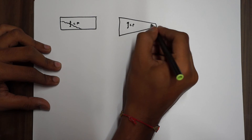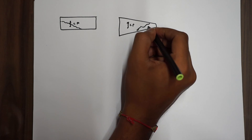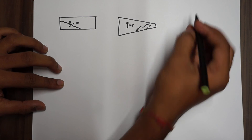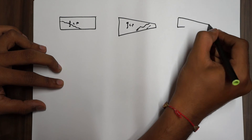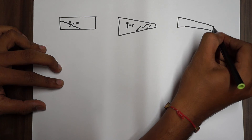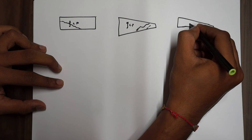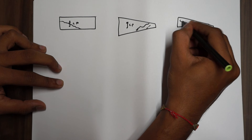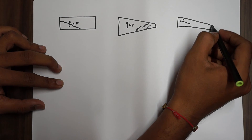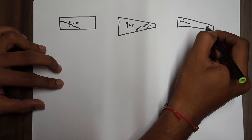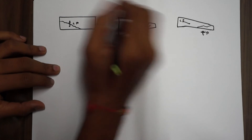For a tapered wing, the CP moves in a certain direction, but in this case the tip stalls first. Then you have a swept-back wing, where the CP moves towards the root and forward, but again, the tip stalls first — tip stall.